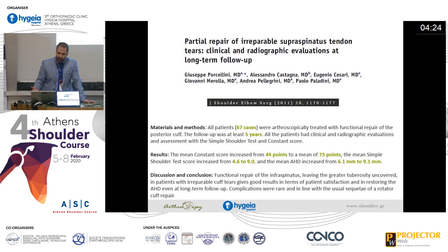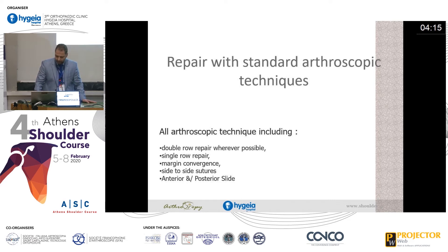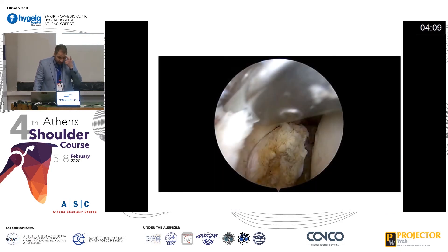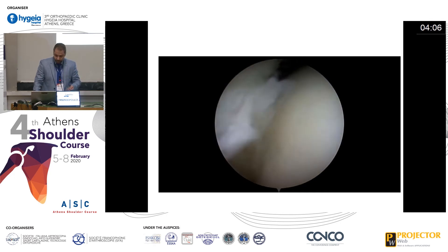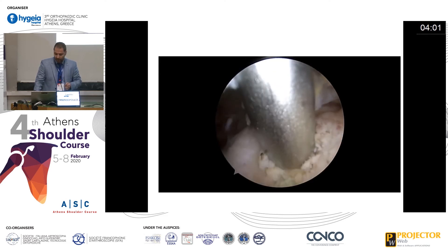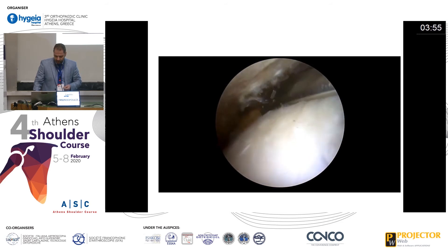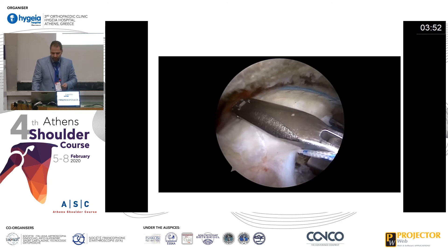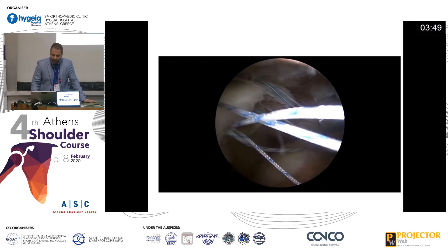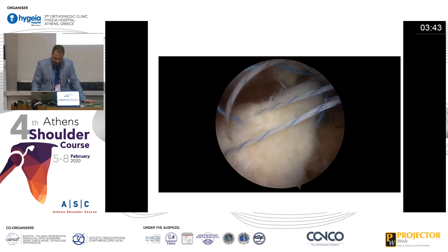Our standard arthroscopic techniques are double or single row techniques, side-to-side sutures, and anterior or posterior slide. Here we have cleared out the bursa and are trying to bring the supraspinatus to its anatomical landmark — the tuberosity — and fix the supraspinatus at the tuberosity in the anatomical footprint.